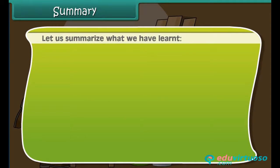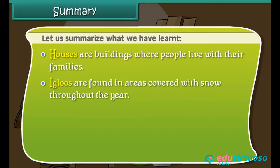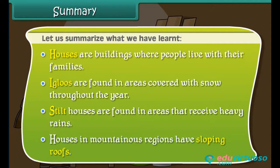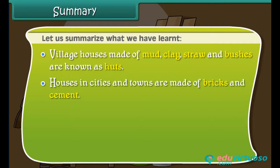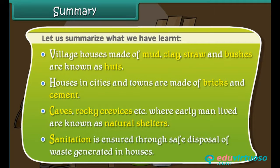Let us summarize what we have learned. Houses are buildings where people live with their families. Igloos are found in areas covered with snow throughout the year. Stilt houses are found in areas that receive heavy rains. Houses in mountainous regions have sloping roofs. Village houses made of mud, clay, straw, and bushes are known as huts. Houses in cities and towns are made of bricks and cement. Caves and rocky crevices where early man lived are known as natural shelters. Sanitation is ensured through safe disposal of waste generated in houses.